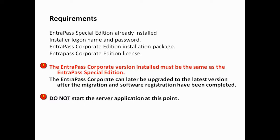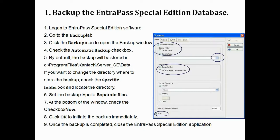So, requirements again: we need the Special Edition running, we need the login information, and we need to download the Corporate installer at the exact same version as the one running — for example version 5.0.0.28. Contact Feenics support and they will help you. After installing Corporate on the same computer, please do not start the Corporate software. Also, during that installation, we only install the server — do not install any additional components like Gateway or SmartLink.